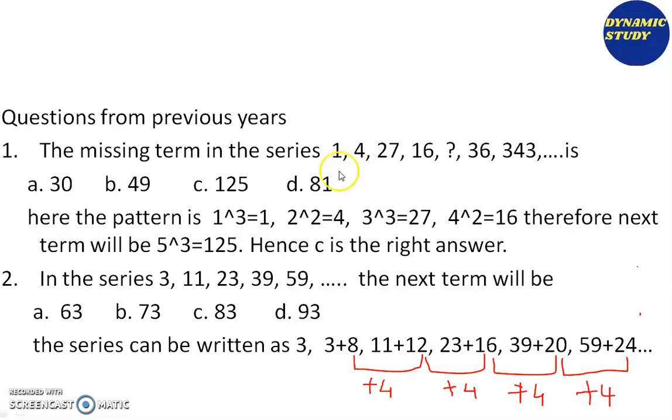What will the next term be? 5, and that also is 5 cube. If you look at this: 1 cube is 1, 2 square is 4, 3 cube is 27, 4 square is 16. Therefore, the next term will be 5³ = 125. Hence, C is the right answer.